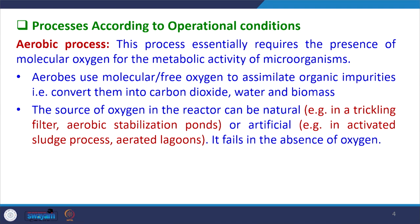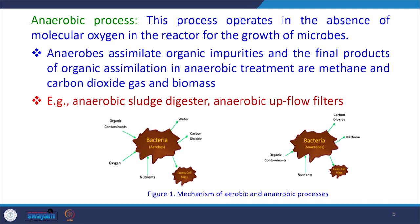According to operational conditions — whether oxygen is supplied or not — processes may be classified as aerobic, anaerobic, or facultative. In aerobic processes, molecular oxygen is required for maintaining the metabolic activity of microorganisms. Aerobes use free oxygen to assimilate organic impurities, converting them into carbon dioxide, water, and biomass. The source of oxygen can be natural, as in trickling filters and aerobic stabilization ponds, or artificial, as in the activated sludge process and aerated lagoons.